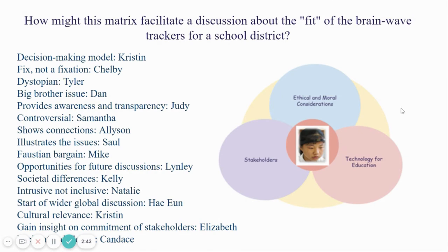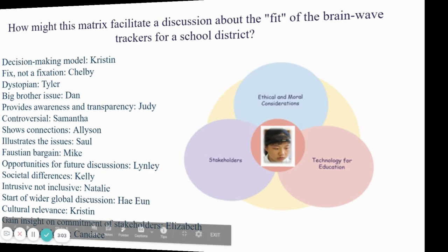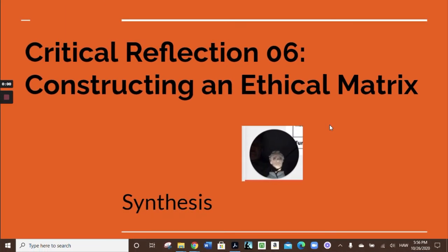The matrix would also perhaps bring up controversial issues, but it could show connections and illustrate the issues — maybe showing it could be a Faustian bargain, though with opportunities for further discussion. It would look at our societal differences, may show this might be more intrusive and not inclusive, and it's a start of a wider global discussion that may focus on cultural relevance. We could gain insight on the commitment of stakeholders, and it could facilitate discussions in general. Thank you. Here's my synthesis.